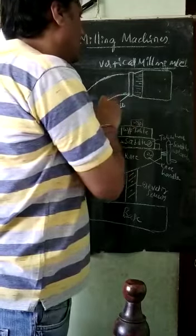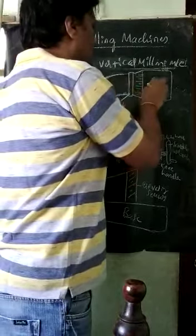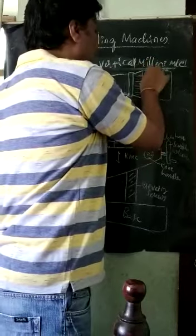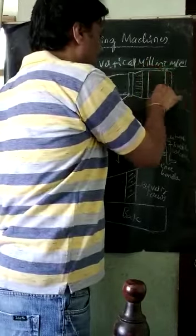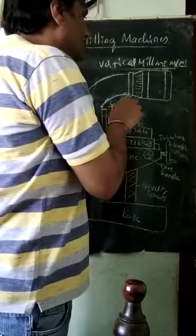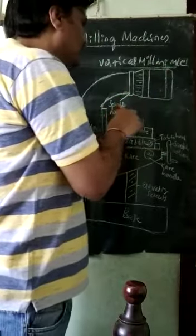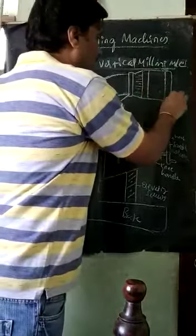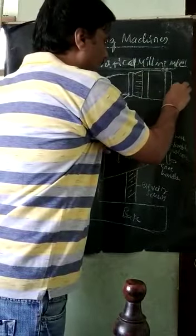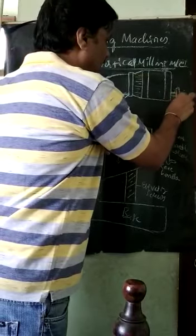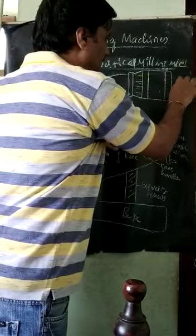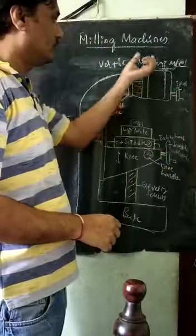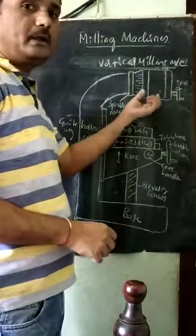The spindle body starts here. This spindle body can move up and down by a wheel — it is a handle called the spindle handle. By rotating this wheel, the spindle will move up and down.